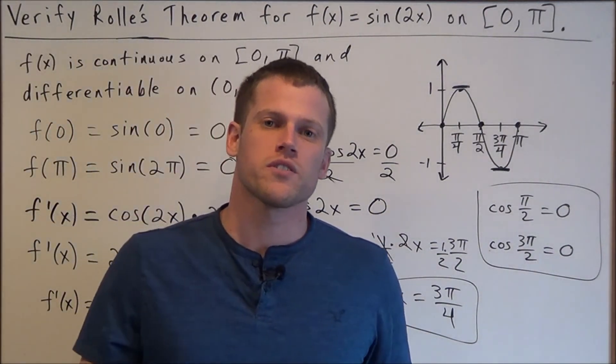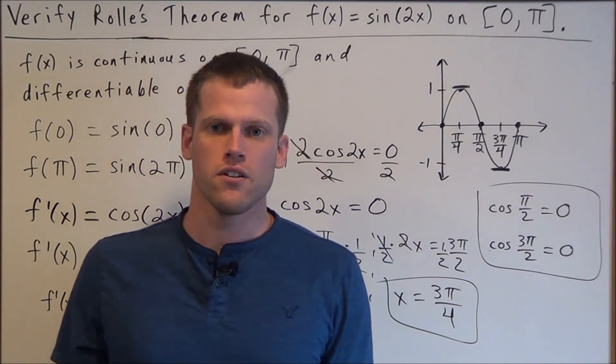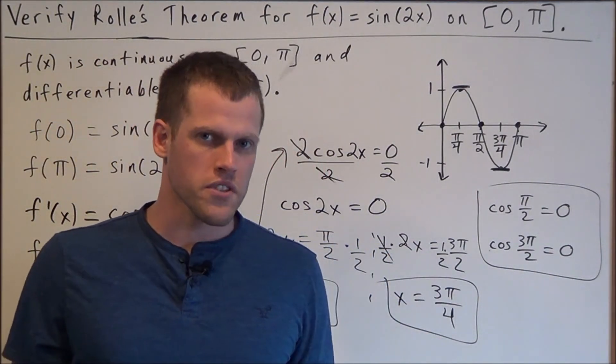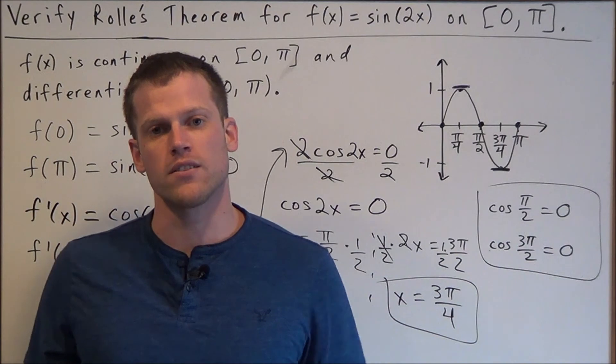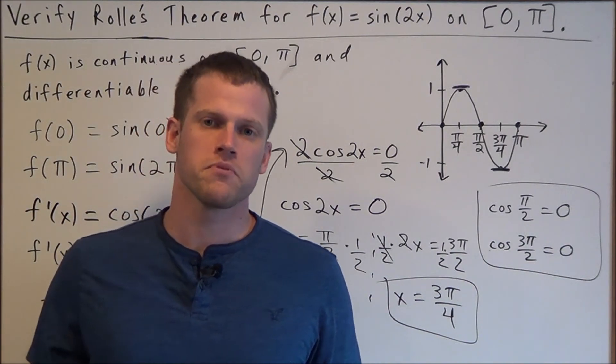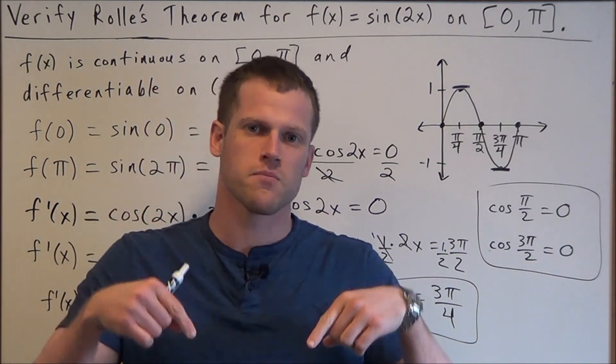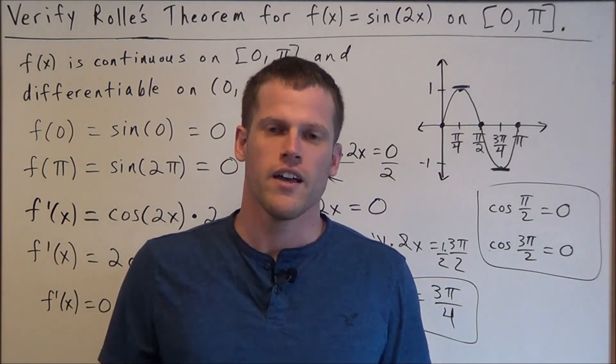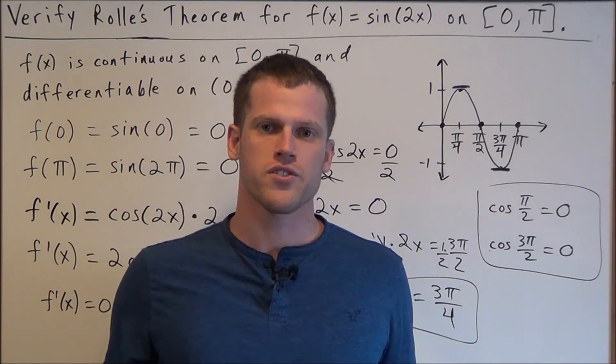To summarize: since the three conditions of Rolle's theorem were met, we're guaranteed to find values between 0 and pi where the derivative equals 0. Those values, x = pi/4 and x = 3pi/4, satisfy the conclusion of Rolle's theorem, and it's very important that the values found lie between the two endpoints. This concludes the video on Rolle's theorem — if you found it helpful, please click like and subscribe. Thanks for watching.